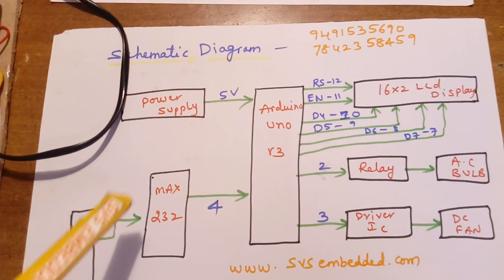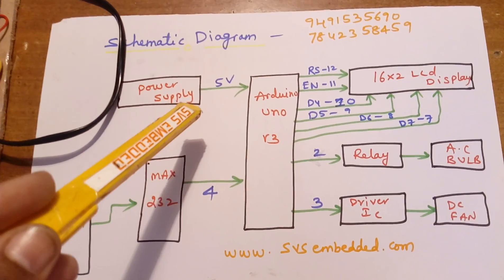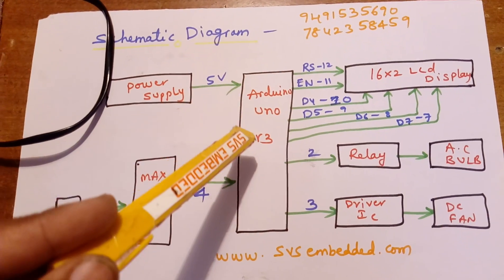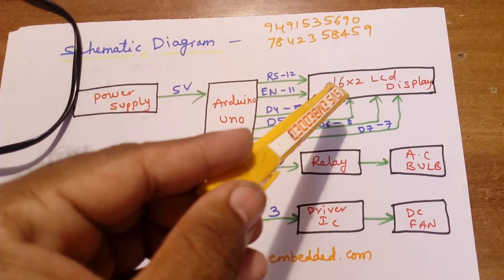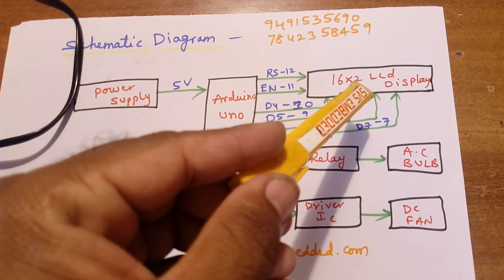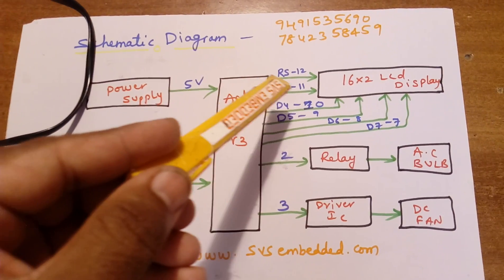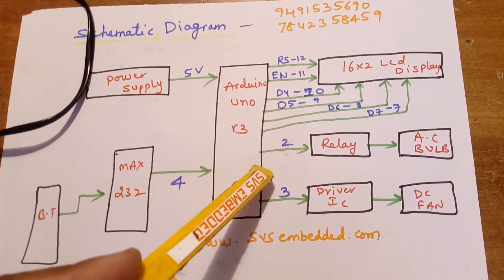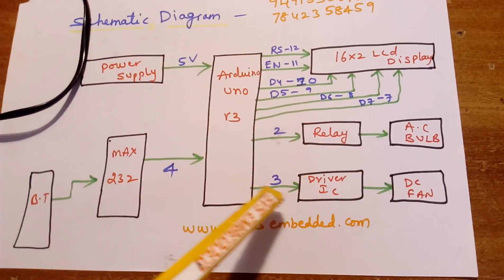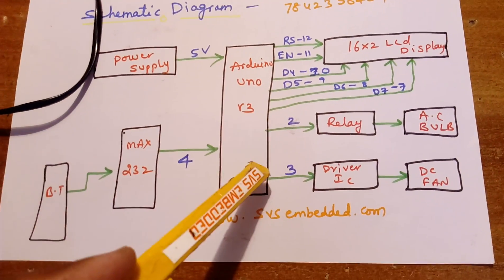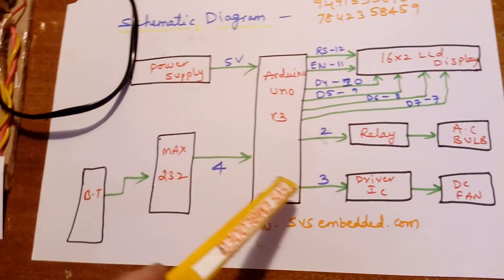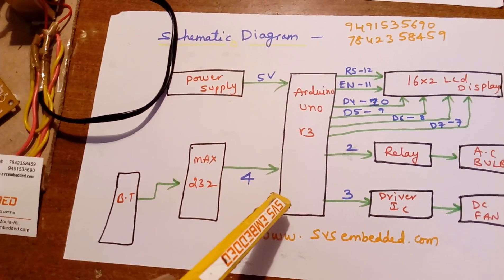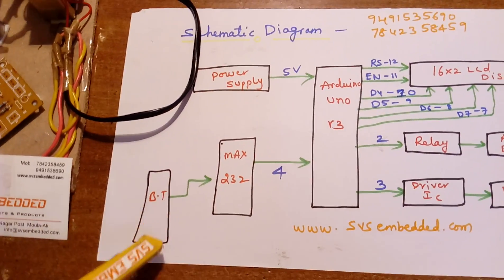Here is the schematic diagram. The power supply is 5 volts for the Arduino Uno R3. The 16x2 LCD display connections: RS, Enable, D4, D5, D6, D7. The relay coil connects to the AC bulb on the second and third pins. The driver IC connects to the DC fan, and the RX is connected to the fourth pin along with the Bluetooth module.